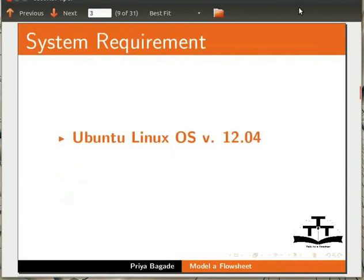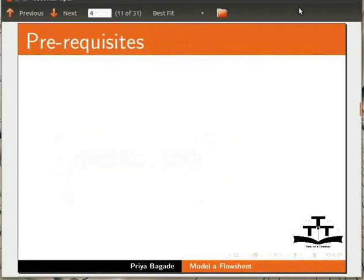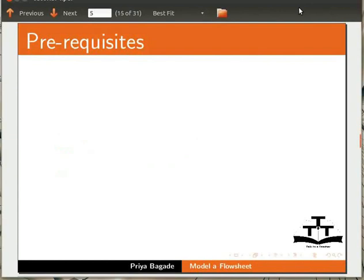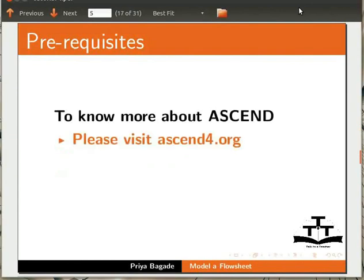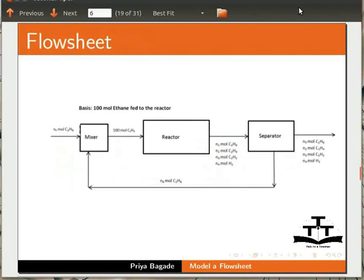Here I am using Ubuntu Linux OS version 12.04 and Ascend version 0.9.8. To follow this tutorial, users must have basic knowledge of Linux and Ascend. To know more about Ascend, please visit Ascend4.org. For relevant tutorials, please visit our website spoken-tutorial.org.